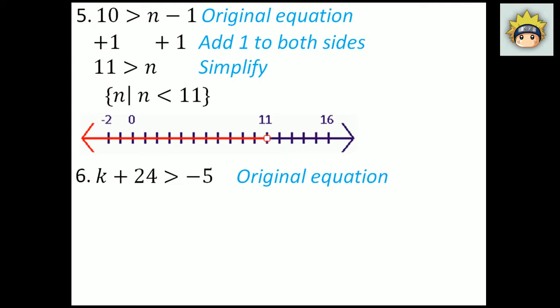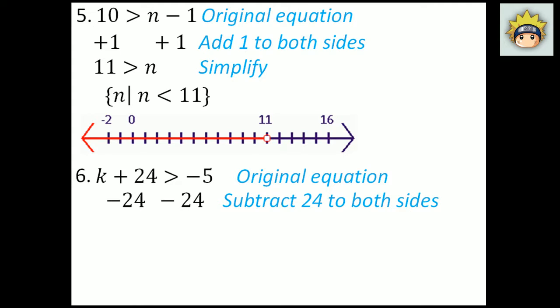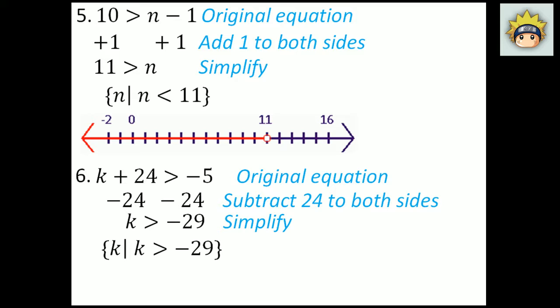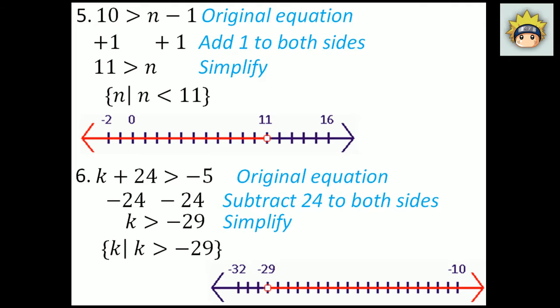Number 6. The original equation is k plus 24 is greater than negative 5. Subtract 24 from both sides because that is the inverse property. What I have left on the left-hand side is k. On the right-hand side, negative 5 minus 24 is negative 29, because subtracting a number makes it more negative. In set builder notation: k, k is greater than negative 29. It is an open dot on negative 29 and k is greater than any value above negative 29. So negative 28, negative 27, 0 and so forth — k has to be greater than negative 29.